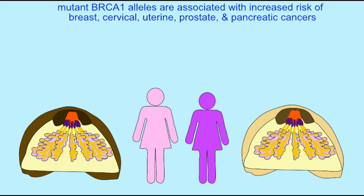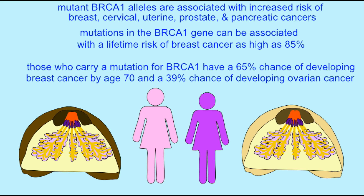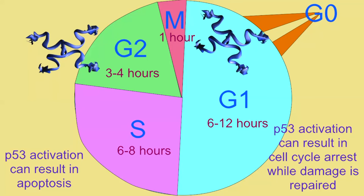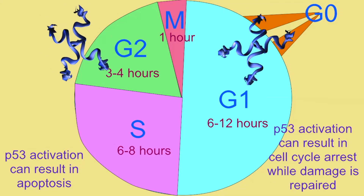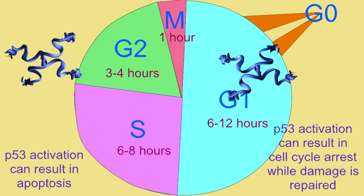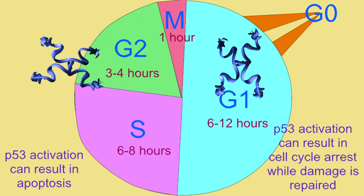So, BRCA1, which is often mutated in breast cancer, the genes ATM, ATR, and the checkpoint kinases are all involved in increasing P53 levels to block a cell's passing this G0-G1 checkpoint.